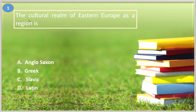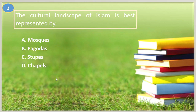Question number one. The cultural realm of Eastern Europe as origin is: A. Anglo-Saxon, B. Greek, C. Slavic, D. Latin. The answer is letter C, Slavic. Anglo-Saxon is not correct since it is Germanic. Greek is also considered as Western Europe. Latin — Hispanic, Italian, Portuguese — is also Western Europe. So Eastern Europe is Slavic.